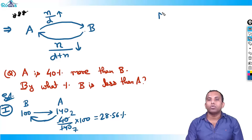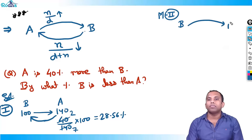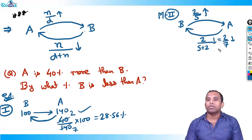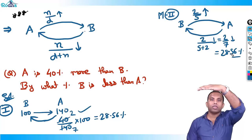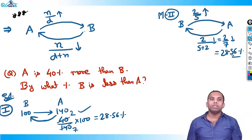Method two — in mind only. A is 40% more than B. 40% is 2/5. If A is 2/5 more than B, then B will decrease by n/(d+n) = 2/(5+2) = 2/7. The answer is 28.56%. B to A is increase of 2/5; A to B is decrease of 2/7. If one side increases, the other must decrease. You can use this method very quickly.